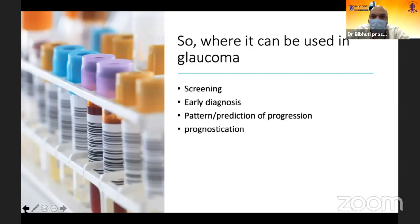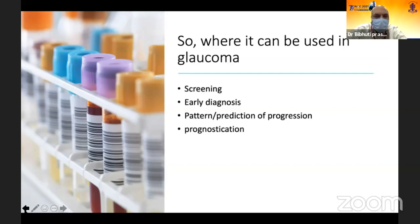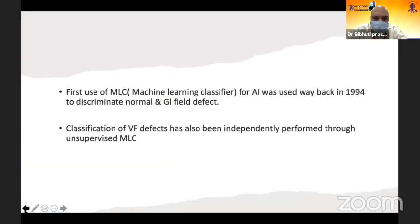AI can also help us in arriving at early diagnosis of the patient. Further, it can detect pattern changes in patient progression, so progression can also be assessed with the help of artificial intelligence. Finally, it can prognosticate, which is now available in newer generations of machines doing visual field assessments. The first use of a machine learning classifier was way back in 1994 to discriminate between normal and glaucomatous visual fields — that was the earliest one.